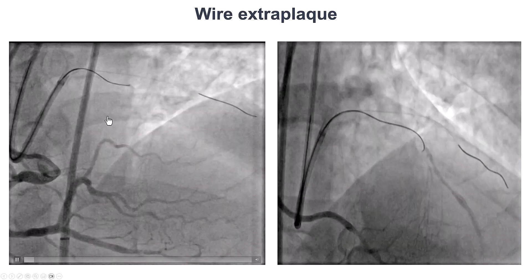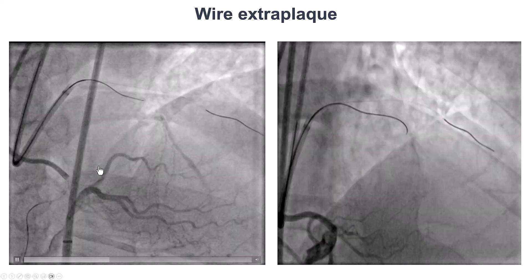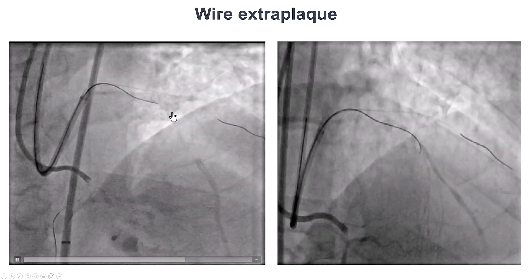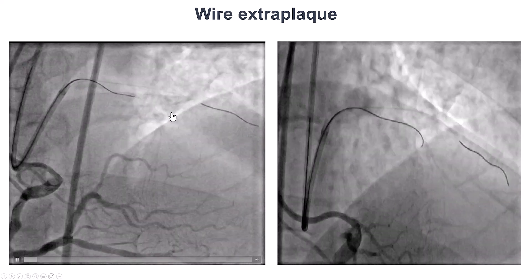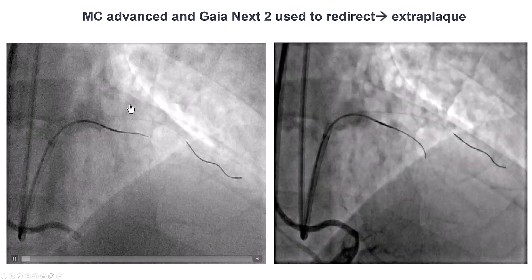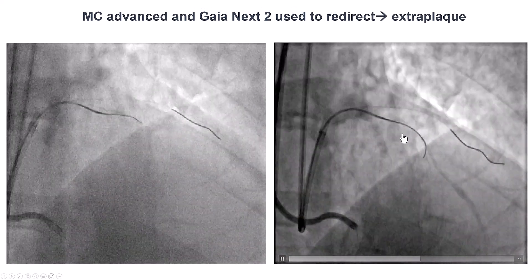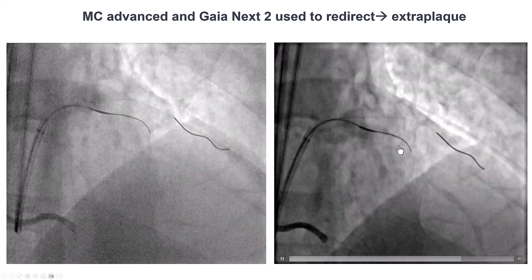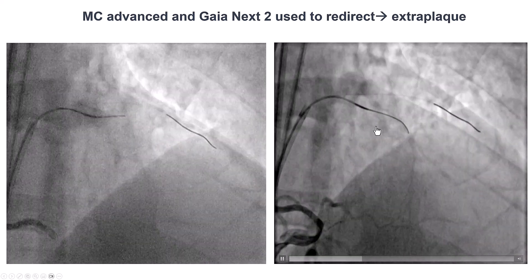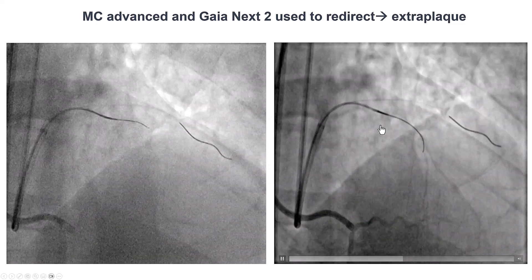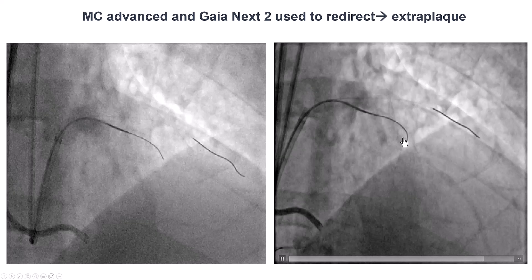Unfortunately, as we see from right coronary injection, the wire is in the extraluminal position. We did a brief attempt to try to redirect the guidewire, but it remained extraluminal. Based on our original plan, we decided to switch to the retrograde approach at this point.